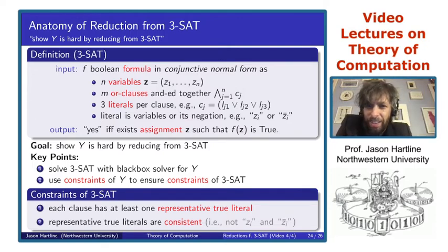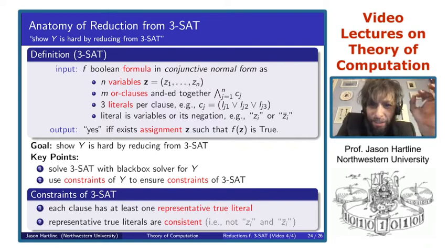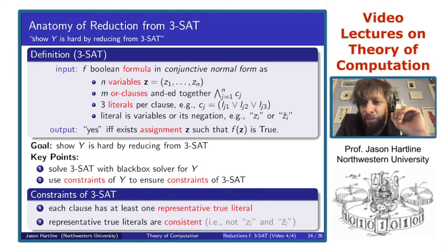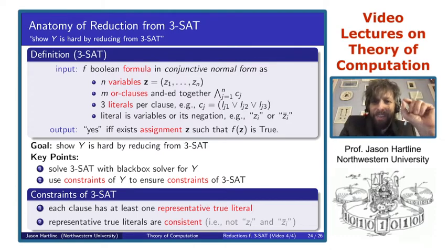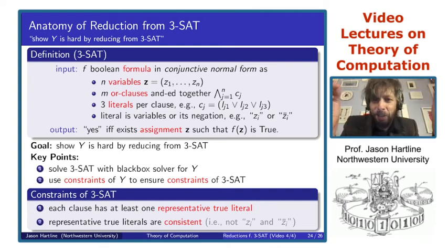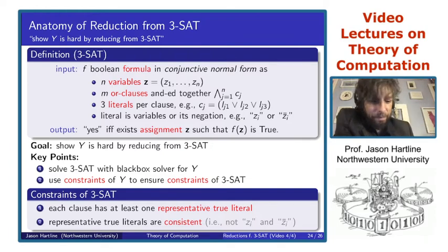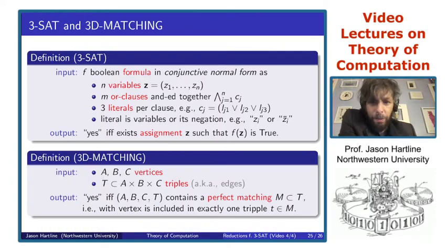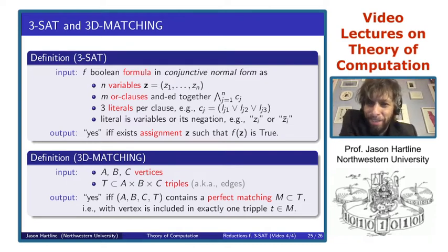What are the constraints of 3SAT? The constraints of 3SAT are that each clause has at least one representative true literal, and representative true literals are consistent — meaning you can't have two representatives from different clauses, one corresponding to variable z_i and the other to z_i bar. Those would not be consistent and would not correspond to a satisfying assignment.